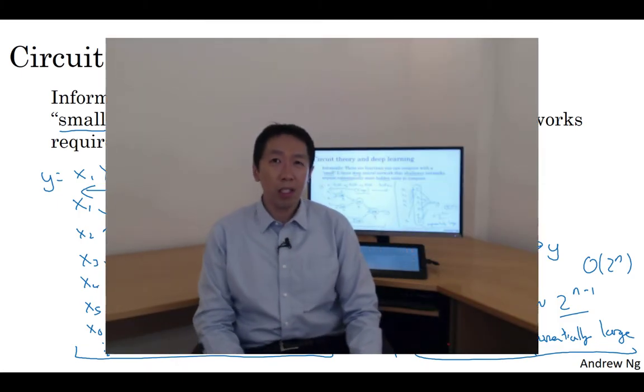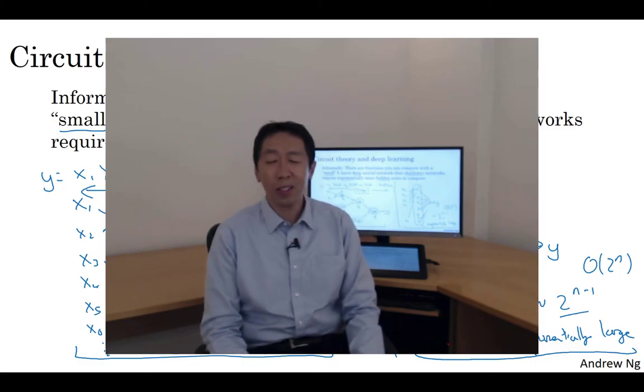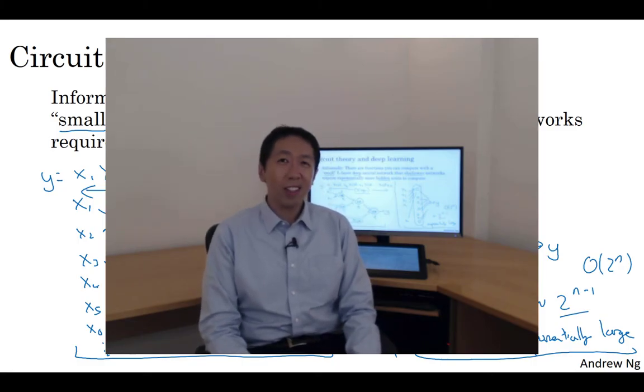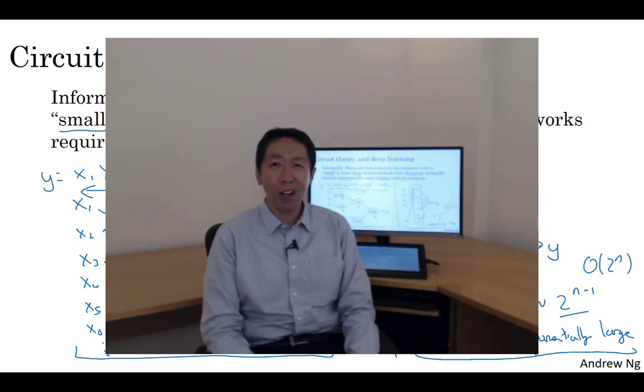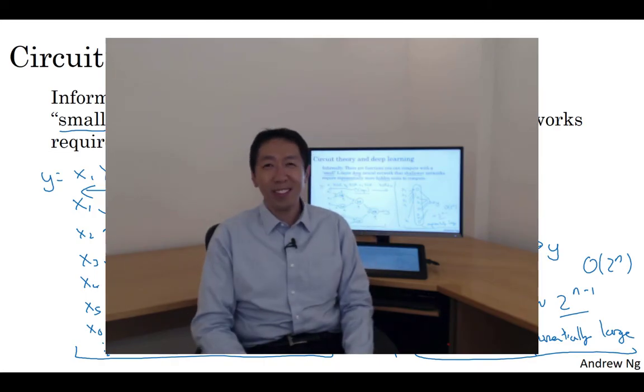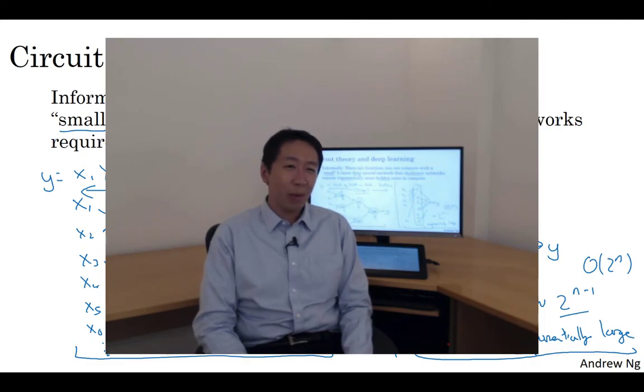Now, in addition to these reasons for preferring deep neural networks, to be perfectly honest, I think the other reason the term deep learning has taken off is just branding. These things used to be called neural networks with a lot of hidden layers, but the phrase deep learning, it's just a great brand. It's just so deep. So I think that once that term caught on that really neural networks rebranded or neural networks with many hidden layers rebranded, it helped to capture the popular imagination as well. But regardless of the PR branding, deep networks do work well.